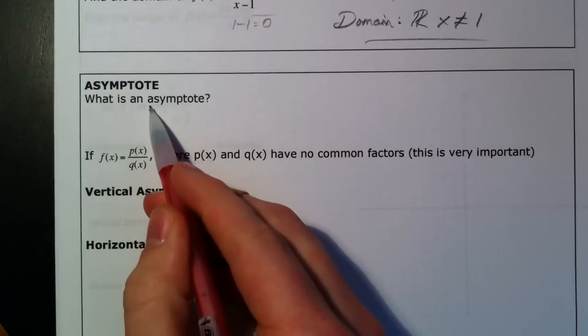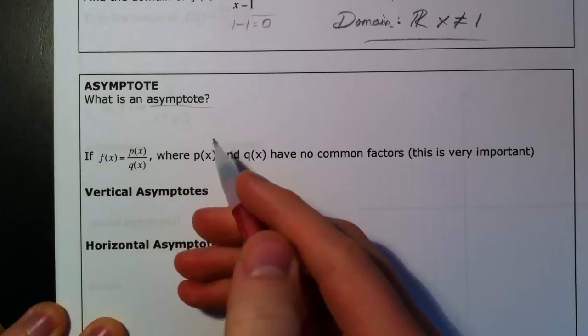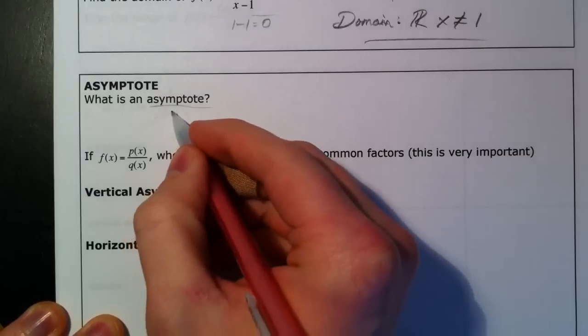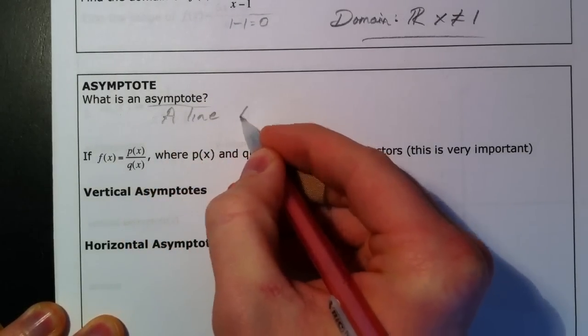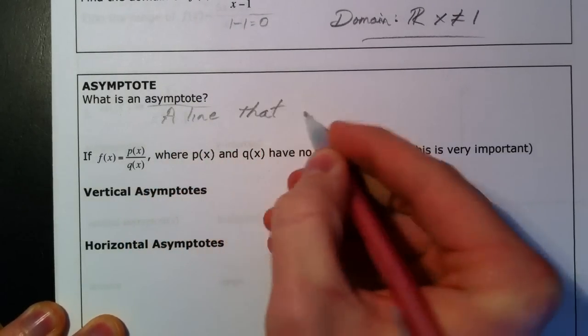So, what is an asymptote other than being a really weird word? It's a line that a graph approaches but never actually touches.